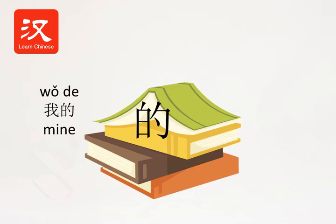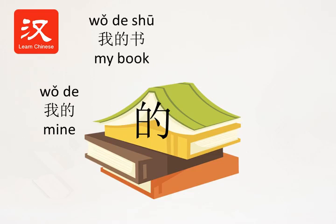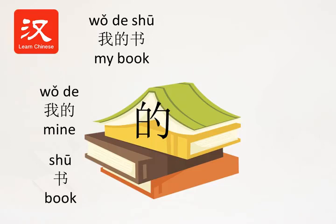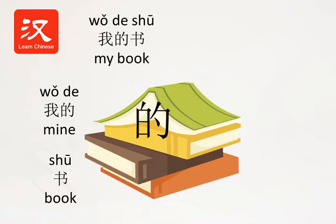I see. 我 means 'I', and when there is a 的 after it, the meaning changes to 'mine.' So 的 signals that something belongs to someone, correct? Yes. For example, 我的书 — my book. 书 means book, first tone: 书. 我的书, my book.